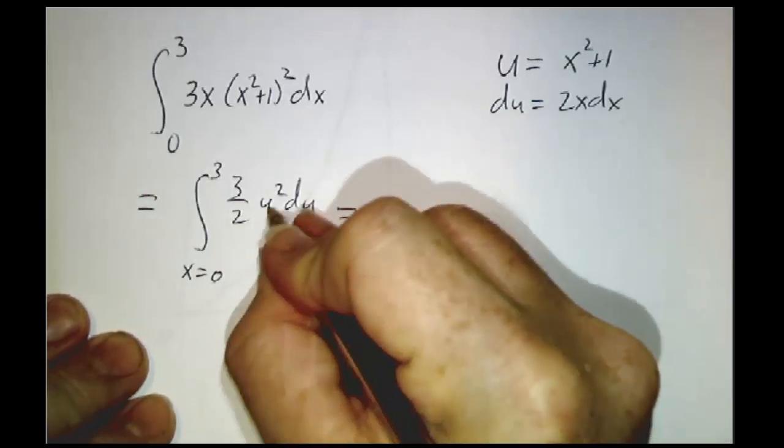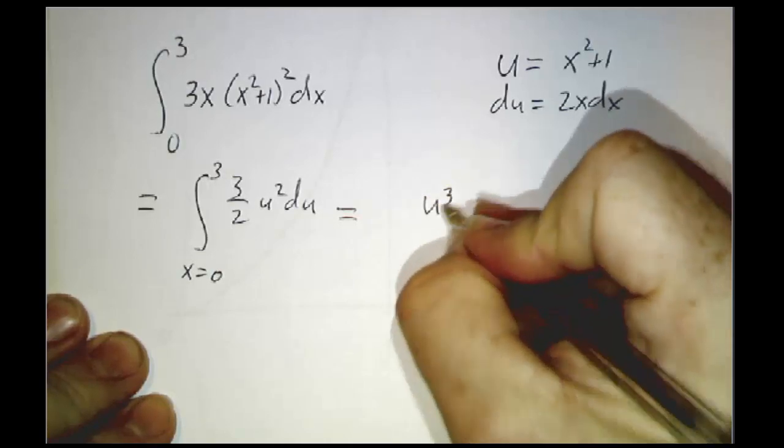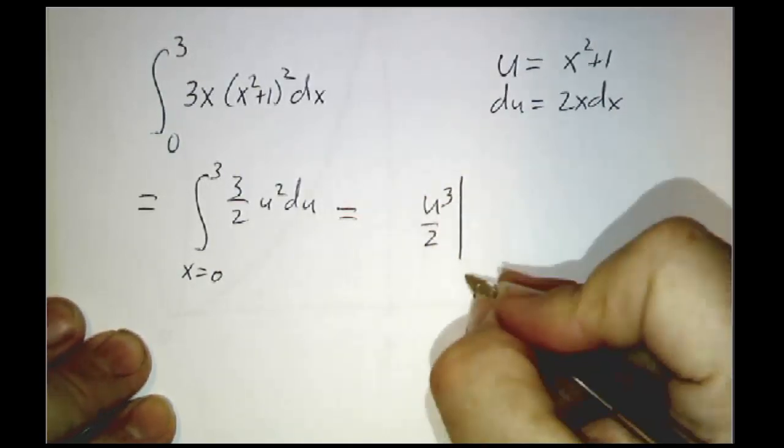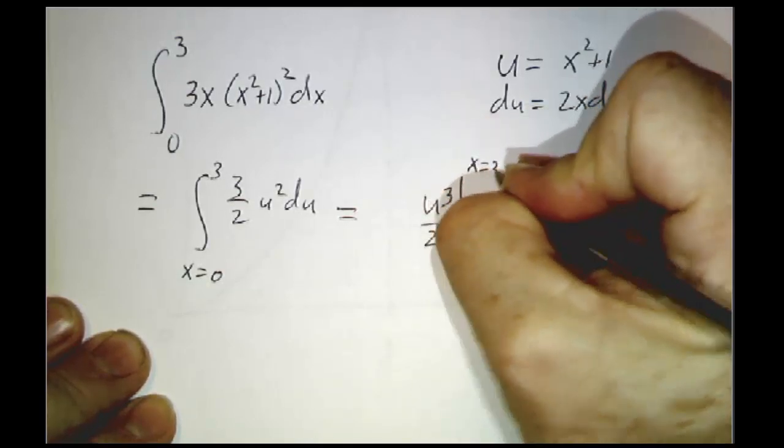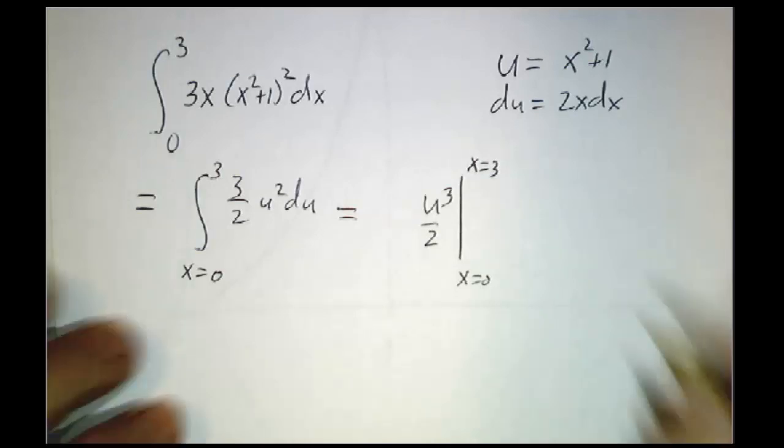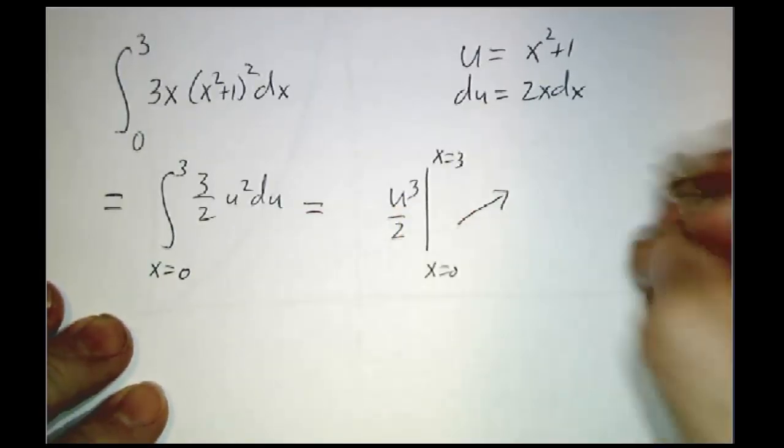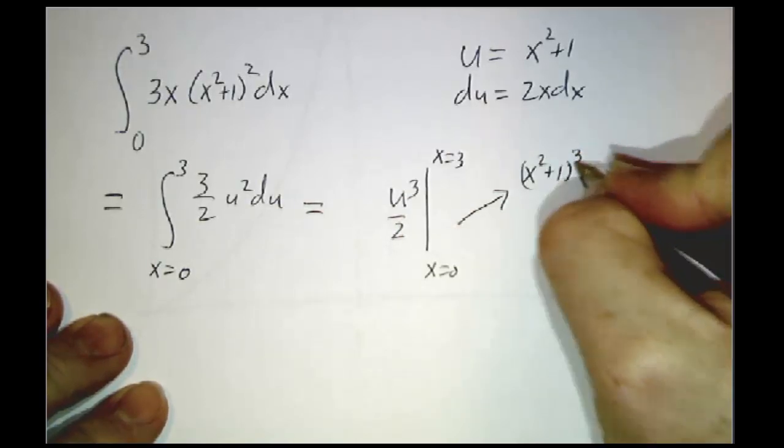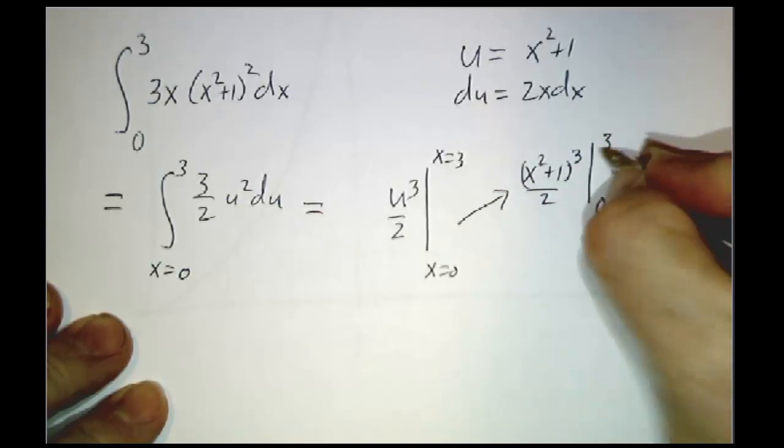And our limits of integration are as x goes from 0 to 3. Now, the integral of 3u squared is u cubed. So you want u cubed over 2 evaluated at the endpoints x equals 0 and x equals 3. In one approach, we said, let's write u in terms of x. So this becomes x squared plus 1 cubed over 2 evaluated at x equals 0 and at 3.